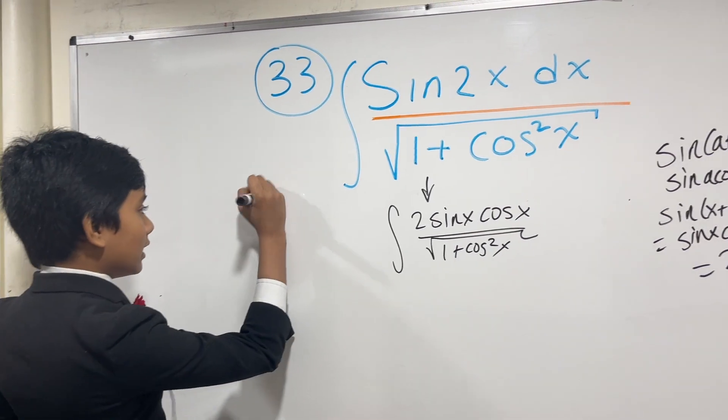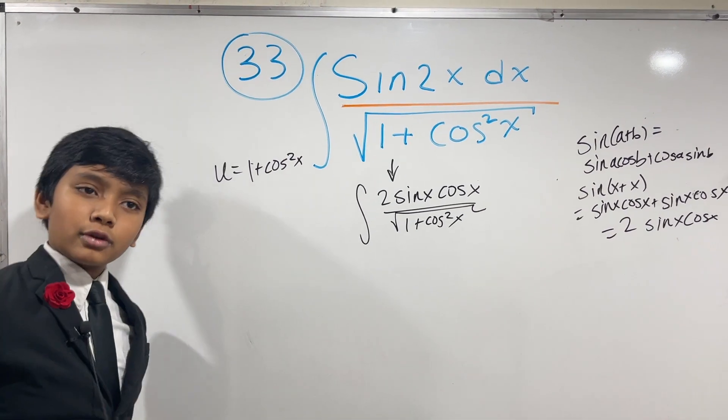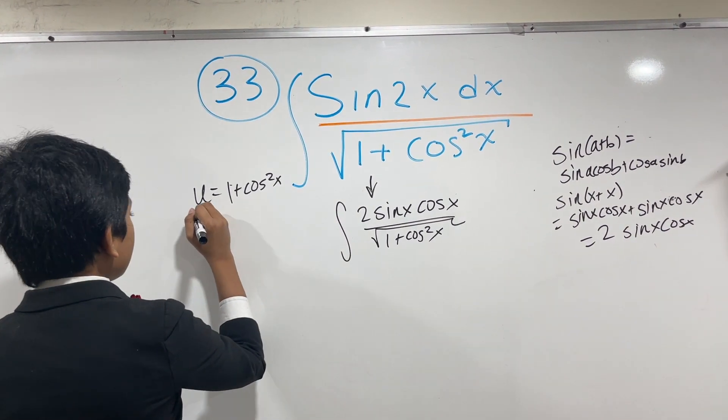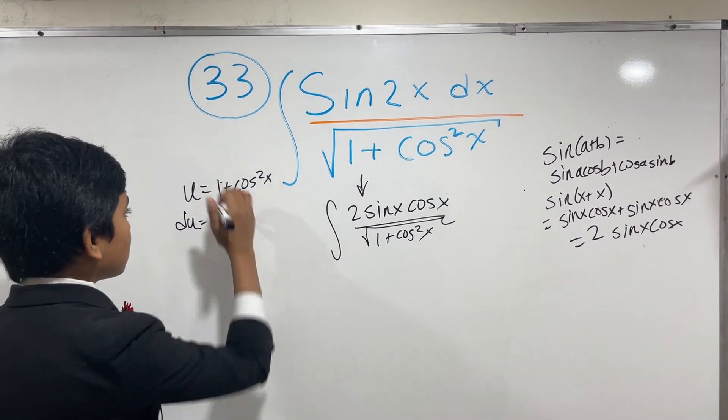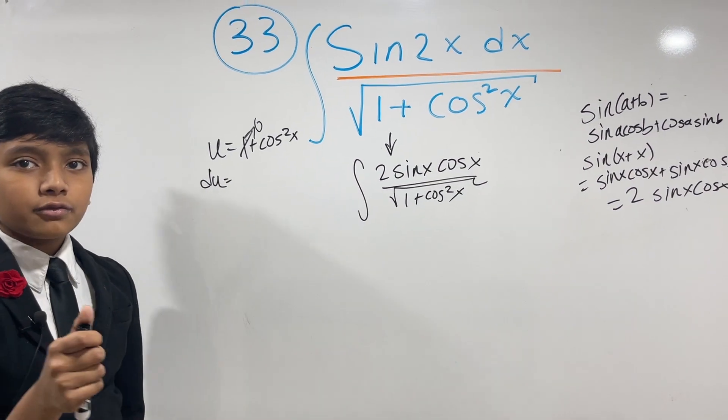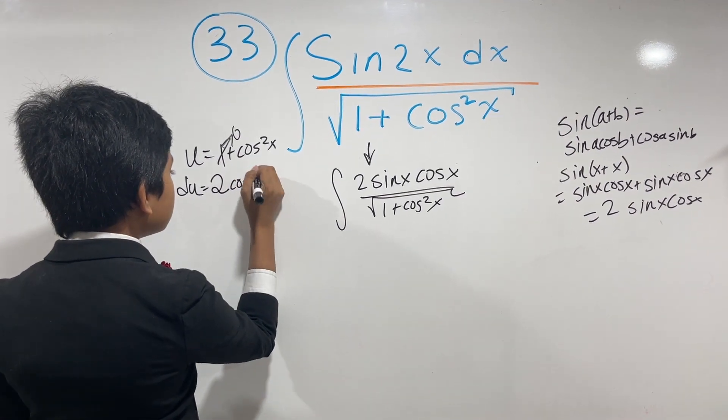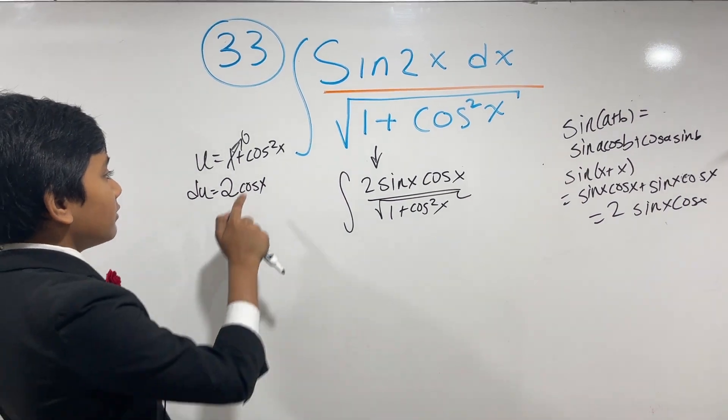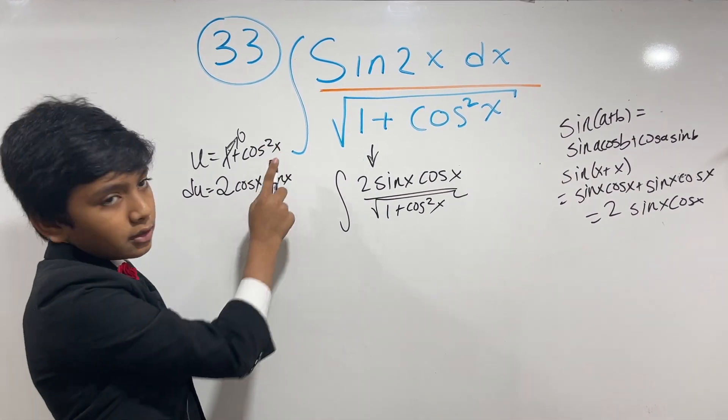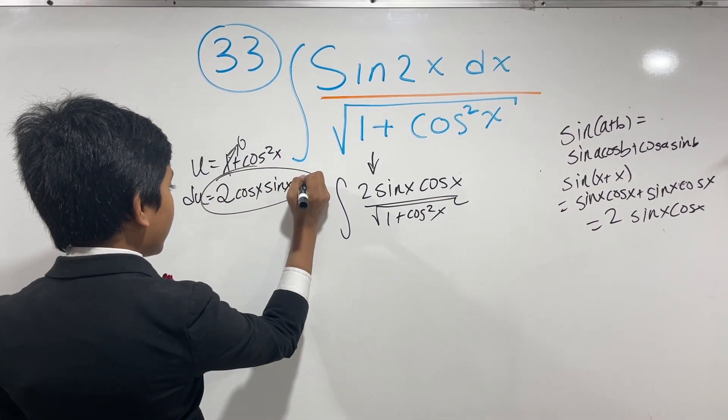We need to u sub. u is 1 plus cos squared x. And you have to double-chain over this differentiation. Well, not really, because the derivative of x is just 1. So du is actually going to be, let's work this out. Derivative of constants is 0. Then we have cosine squared x. We need to take care of that. We power rule it, put that 2 in the front. So we got 2 cosine x. And then, the derivative of cosine x itself is negative sine x. So we get negative 2 cosine x sine x dx.